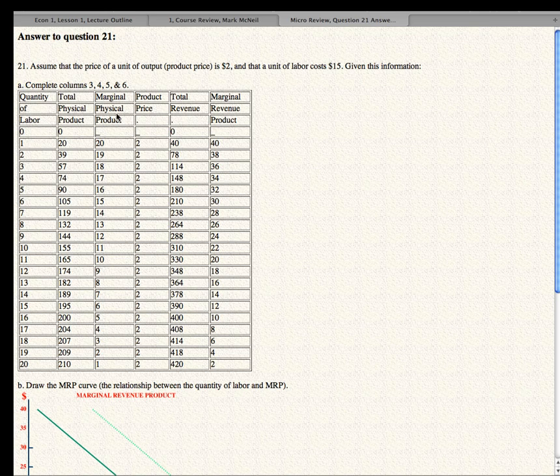This is a firm. It hires zero workers, it produces zero units of output. If it hires one worker, it gets 20 units of output. That's total physical product. And the marginal physical product of the first worker is 20 units produced. It's assumed that this product can be sold for $2 a unit in the market. And so the total revenue, if this firm hires one unit, is 20 units times $2. That's $40. And the marginal revenue product is $40. That's how much the first worker contributed to the marginal revenue of the person that hired them.